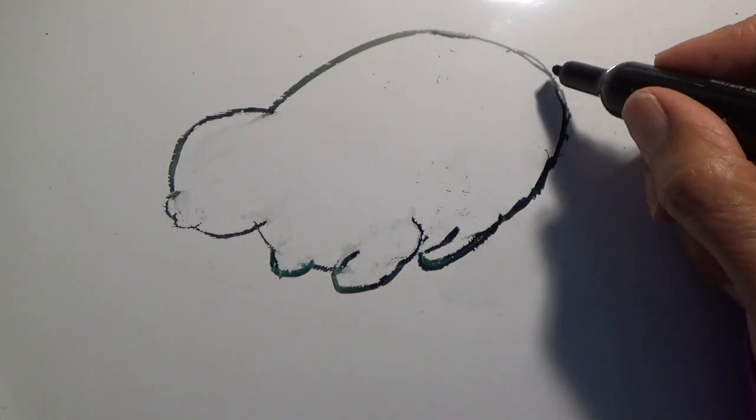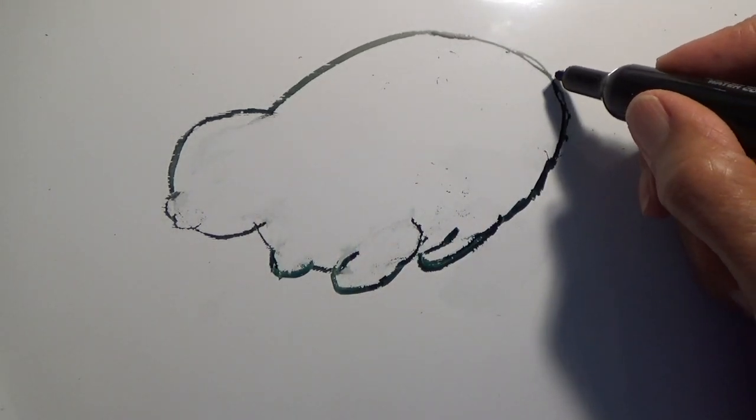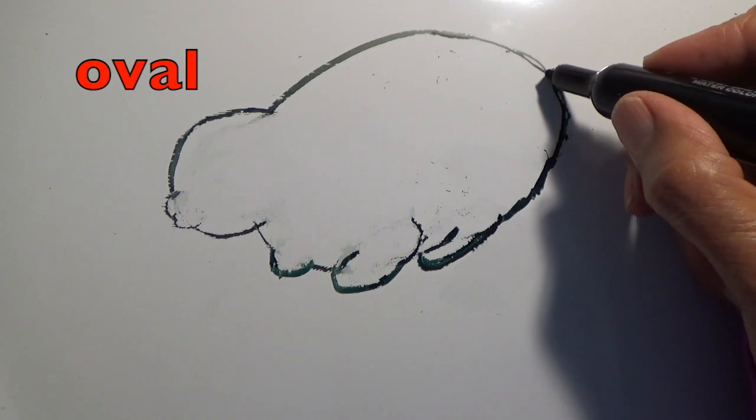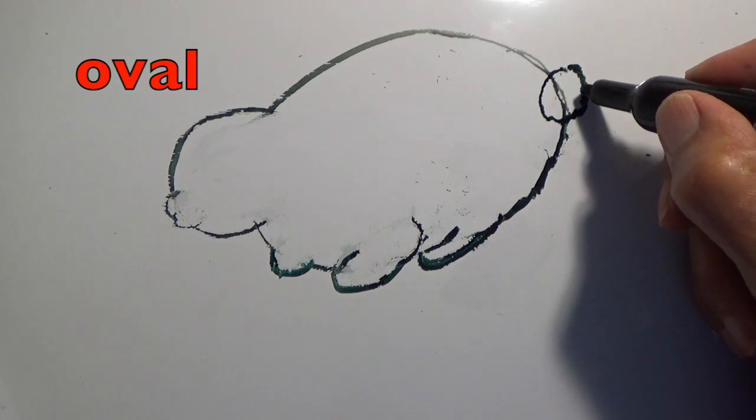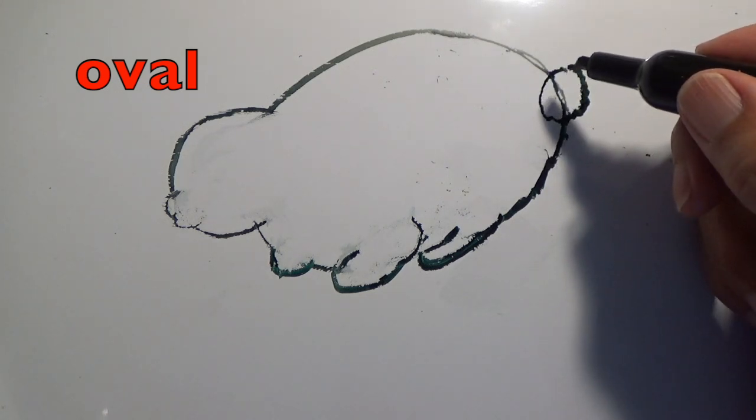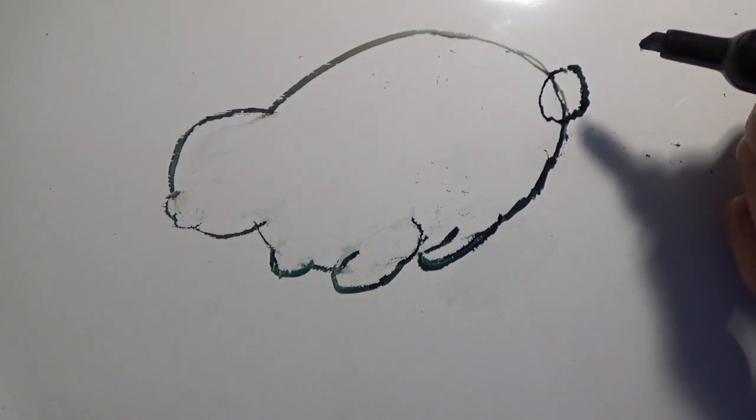And in the back we are going to put a little tail on our bunny. So you are going to make an oval right here. Make it kind of squiggly and have a fluffy little tail. Then erase the inner lines.